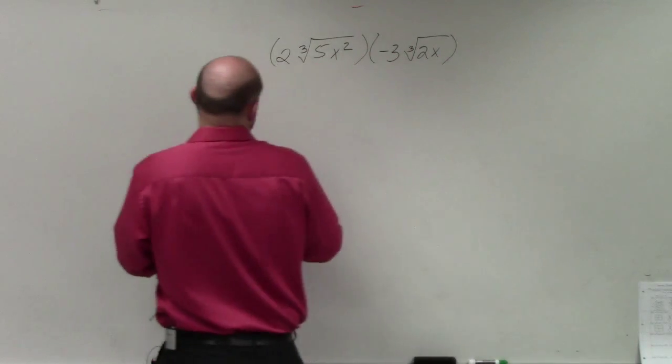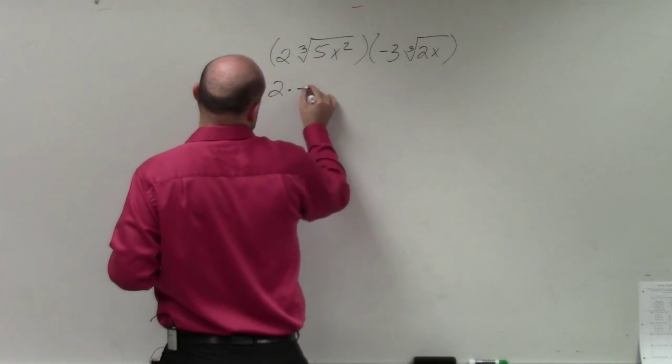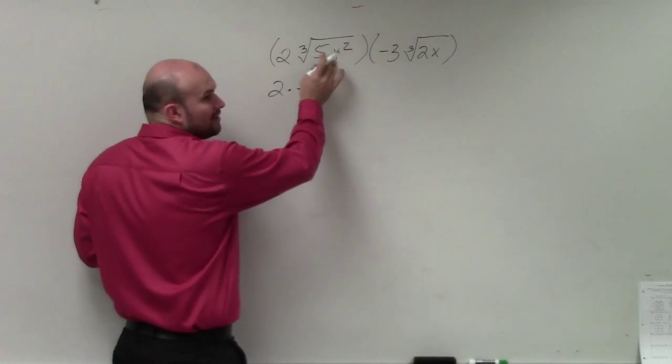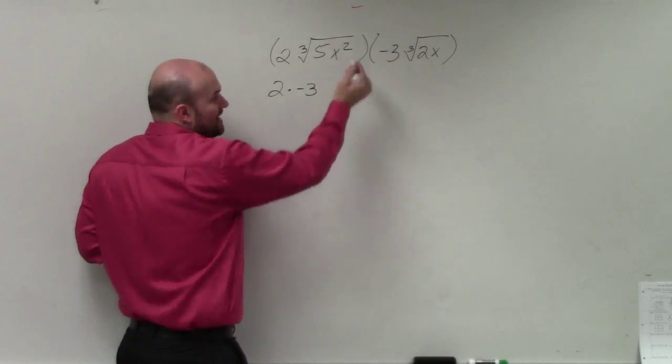So as I mentioned, I'm going to multiply 2 times negative 3. And then here, multiply the radicands, you can multiply on the inside.